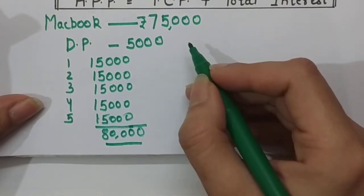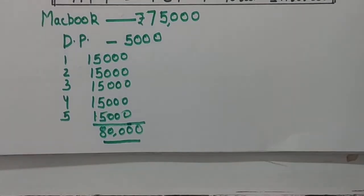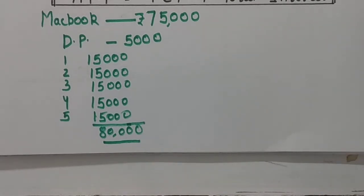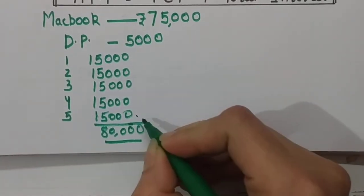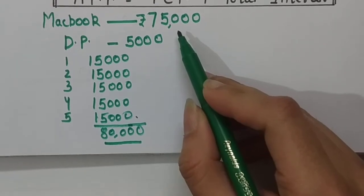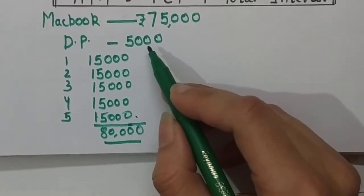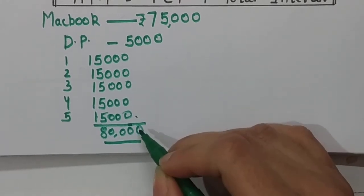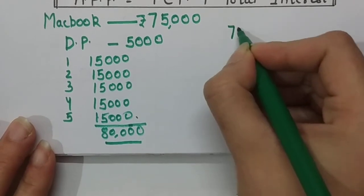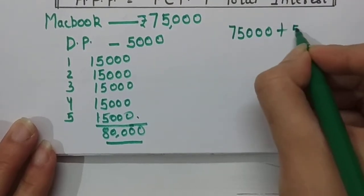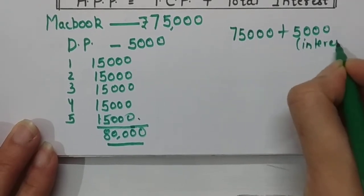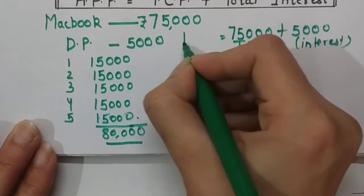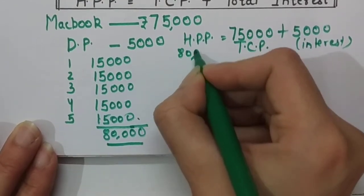This is a kind of hire purchase agreement. The shopkeeper says there will be a clause in the agreement that ownership of the MacBook will not transfer to me until I pay the last 5th installment. The 75,000 is the Total Cash Price (TCP), the extra 5,000 is the interest component, and the total amount I pay — 80,000 — is the Hire Purchase Price.